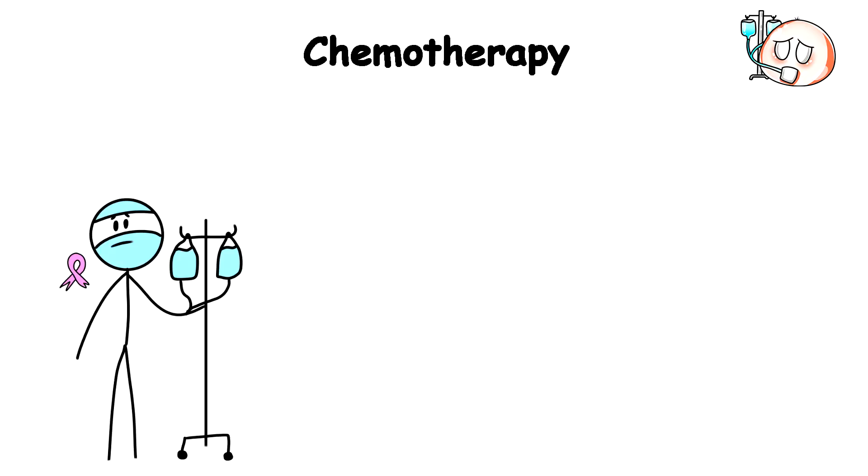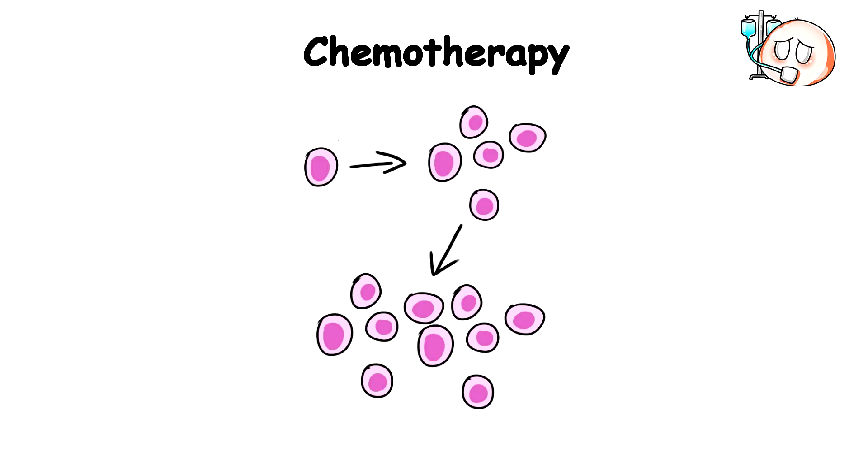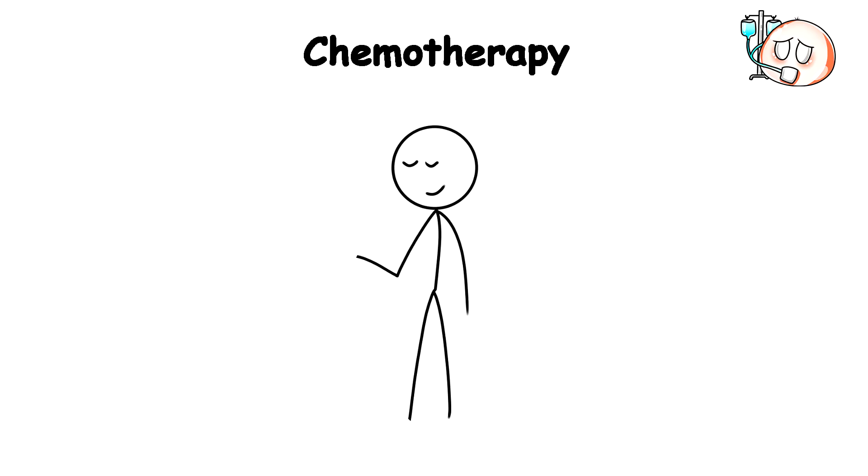Chemotherapy. Almost always, cancer is usually a result of a bunch of cells in a given area that have a mutation that prevents them from dying and makes them just keep on multiplying without caring what will happen to the rest of the body.